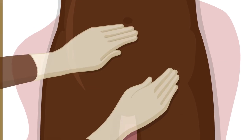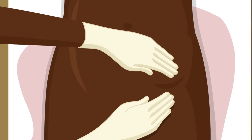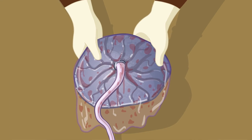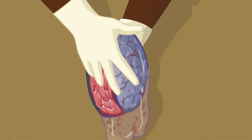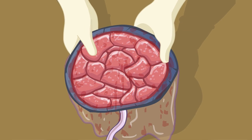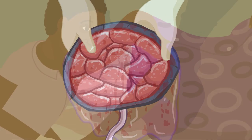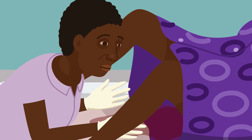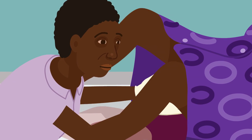Grace performs uterine massage to slow the bleeding, and then checks that the placenta is whole and that no tissue has been left inside the uterus. She makes sure the bleeding is not coming from a tear in the cervix or vagina.